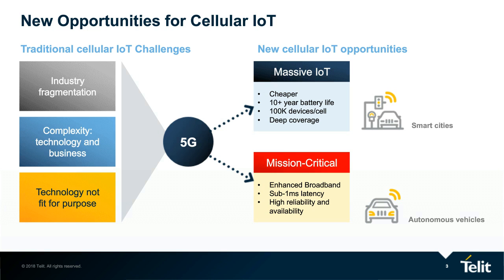On the other side, we have the so-called mission critical applications. When I say mission critical, I'm not referring only to something related to high speed requiring enhanced broadband capabilities, but also to everything related to low latency and high reliability. In a nutshell, we can identify smart cities for massive IoT and autonomous vehicles for mission critical applications — just to put these features in perspective.